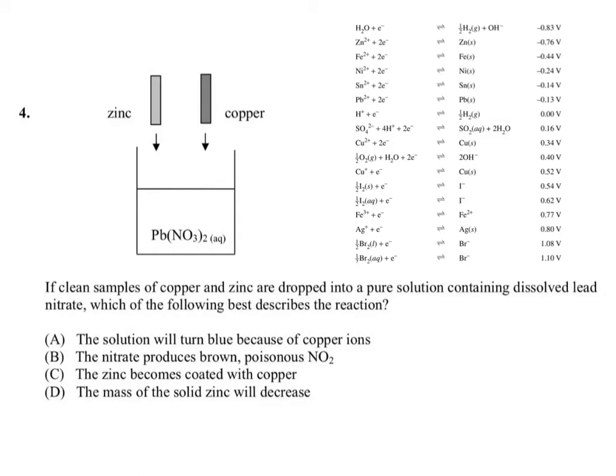Okay, here we've got a question. Clean samples of copper and zinc are dropped into a pure solution containing dissolved lead nitrate. Which of the following best describes the reaction? First off, we need to look at our table of standard reduction potentials. This is just a small section we're going to look at.